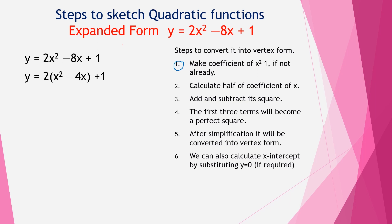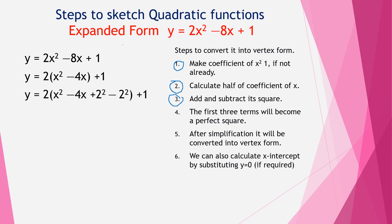Now follow the second step: calculate half of the coefficient of x. The coefficient of x is four, so its half is two. We then make its square and add and subtract it — writing plus two² minus two². The first three terms will give us a perfect square, as mentioned in the fourth step.